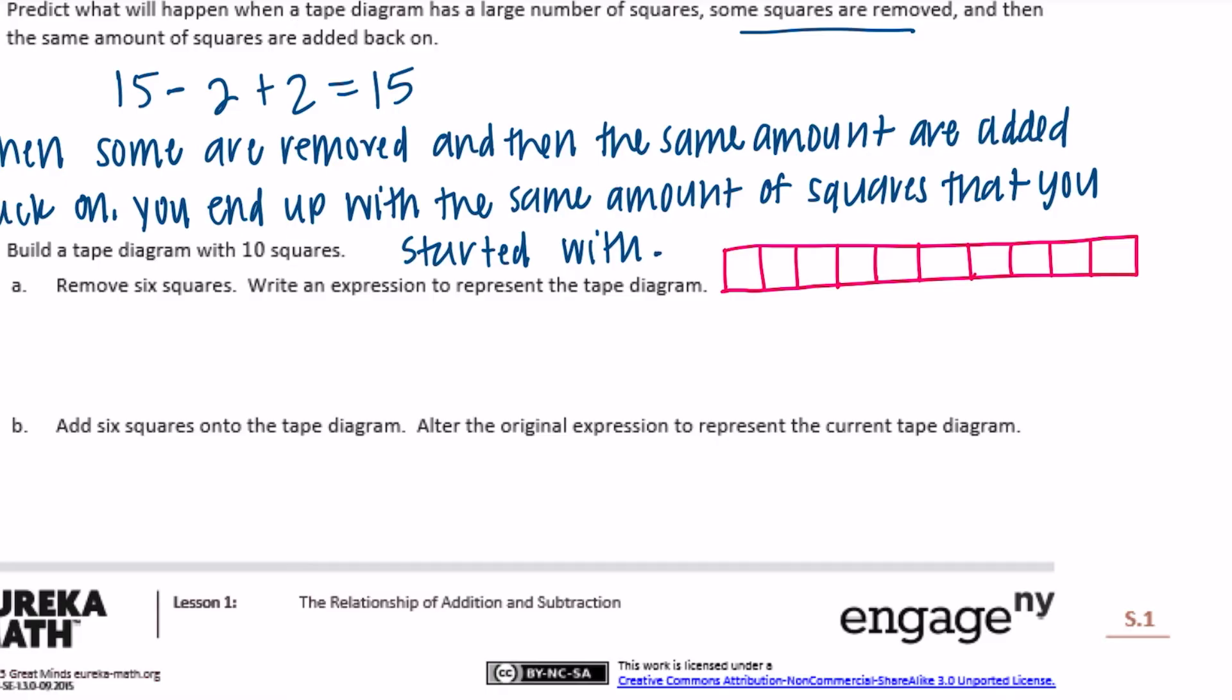It says remove 6 squares. So I'll take out 1, 2, 3, 4, 5, 6. And then write an expression to represent the tape diagram. So what we did is we had 10 and we removed 6, so minus 6. We end up with 4 left, but it's just an expression, we don't need to write equals 4.